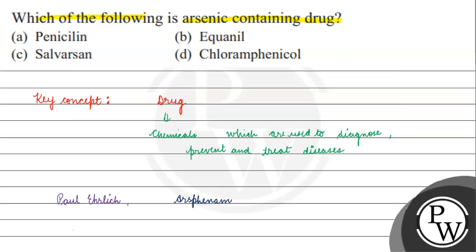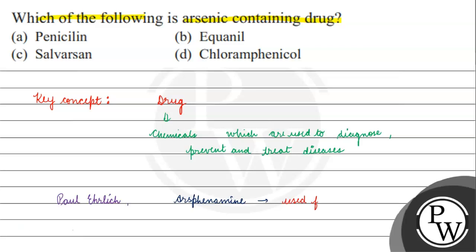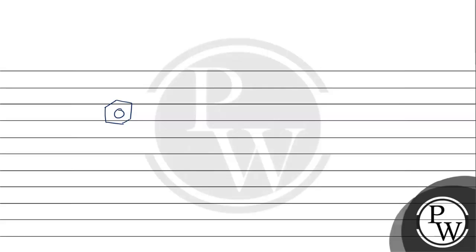He discovered arsphenamine (salvarsan). This is a less toxic arsenic drug used for the treatment of syphilis. This is the salvarsan structure. Salvarsan was basically used for the treatment of syphilis.